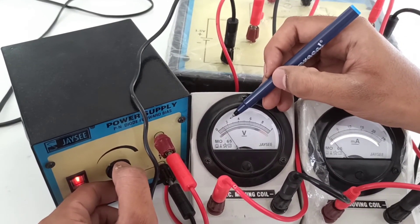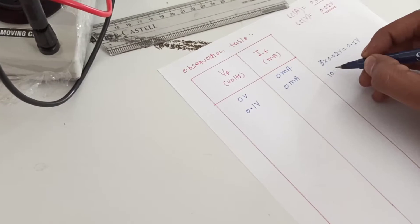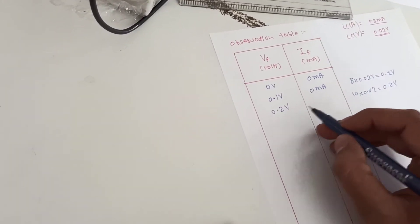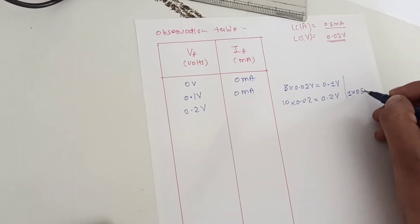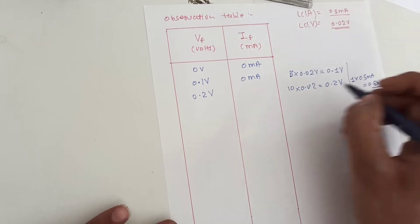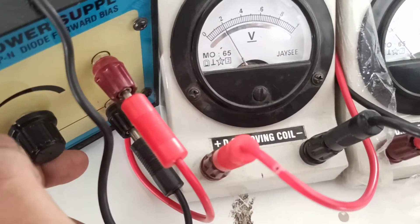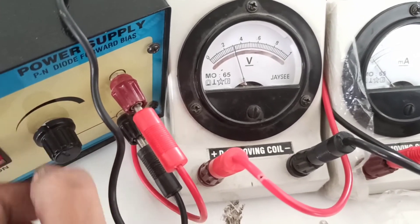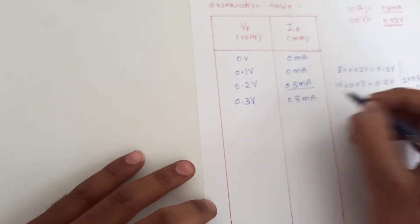For 10 divisions in the voltmeter: 10 into 0.02 gives 0.2 volt. For 0.2 volt, current is 1 division deflected — 1 into least count (0.5 mA) gives 0.5 mA current flowing from the ammeter. For 0.3 volt, by changing the voltage from the battery to 15 divisions — 15 divisions gives 0.3 volt. For 0.3 volt, current is again at 1 division: 0.5 mA.